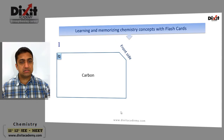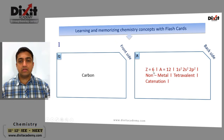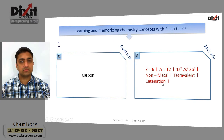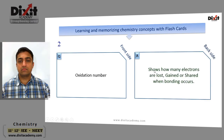Let us discuss a few concepts with the help of flashcards. On the front side I have taken 'carbon.' On the back side, some information about carbon is written: atomic number is 6, mass number is 12, electronic configuration 1s² 2s² 2p². Carbon is a non-metal, it is tetravalent, and it shows catenation.